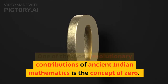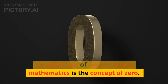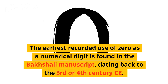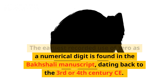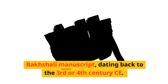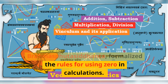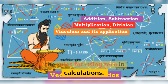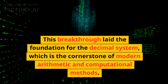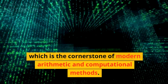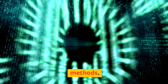One of the most revolutionary contributions of ancient Indian mathematics is the concept of zero. The earliest recorded use of zero as a numerical digit is found in the Bhakshali manuscript, dating back to the 3rd or 4th century CE. The Indian mathematician Brahmagupta, in his work Brahmasphuta Siddhanta, formalized the rules for using zero in calculations. This breakthrough laid the foundation for the decimal system, which is the cornerstone of modern arithmetic and computational methods.